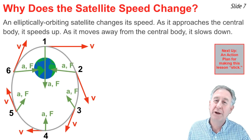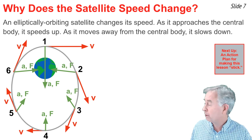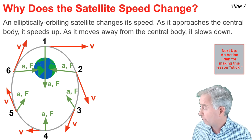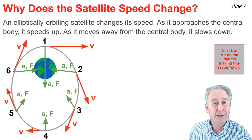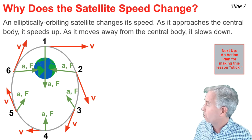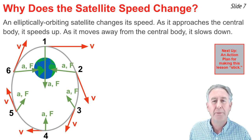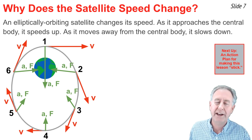An elliptically orbiting Earth satellite is changing its speed. As it travels along the orbital path from location 4 to location 1, it's increasing its speed. And as it travels along its elliptical path from location 1 to location 4, it's decreasing its speed. But why? Why would a satellite change its speed?